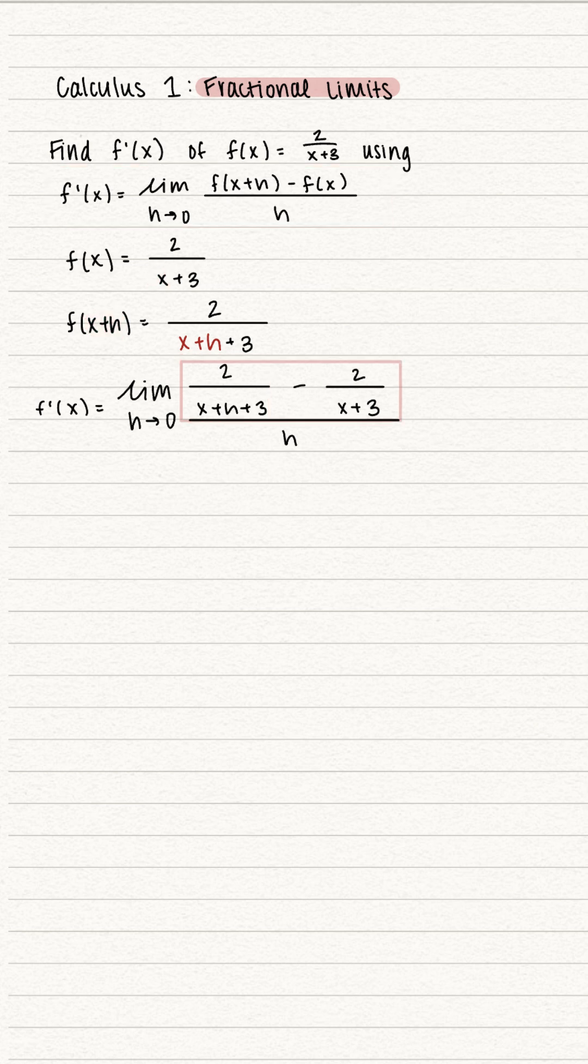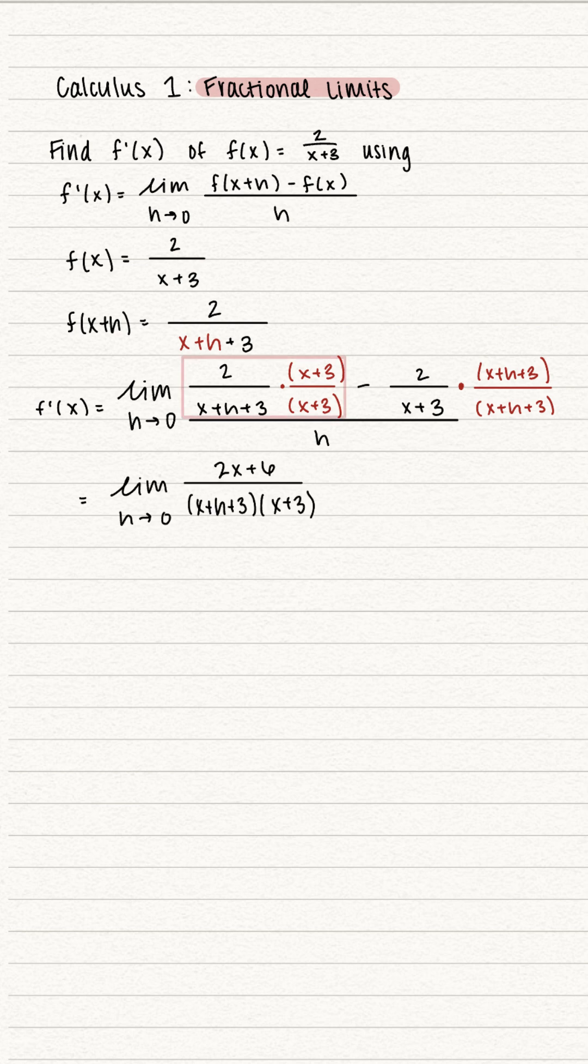We want to combine the numerator into one fraction, so we're going to do that by making a common denominator. We're going to multiply this left fraction by the denominator of the second fraction, but whatever we multiply to the denominator, we also need to multiply to the numerator. Now we're going to do the same thing with the second fraction. So now we can multiply this first fraction minus the second fraction, all divided by h.